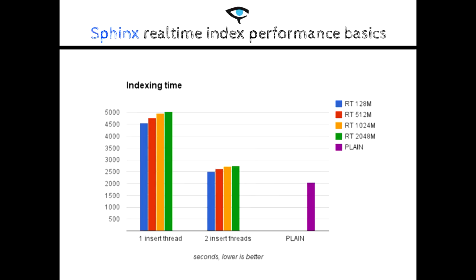And, in the newer versions of Sphinx, a buffer was introduced that can take incoming inserts while flushing is in process. However, you can still get insert stalls if you add a lot of data. If the RAM chunk is big enough, like 2GB or more, it's possible to fill the insert buffer, which is now hard-coded at 10% of the real-time memory limit. And inserts will have to wait until the RAM chunk is flushed. So, you need to consider that RAM flushing can take even more than one minute, depending on CPU core and disk performance. Be sure that the scripts that do the inserts will not time out.